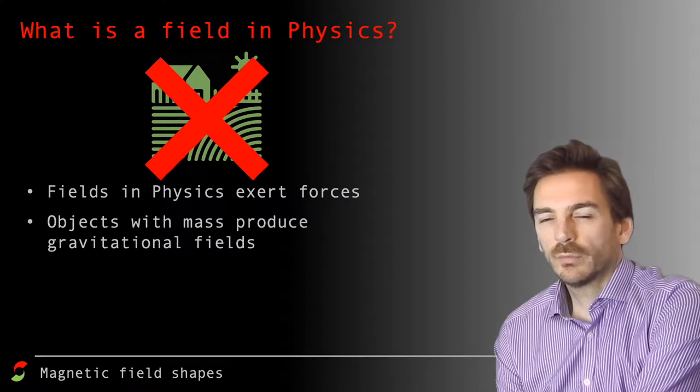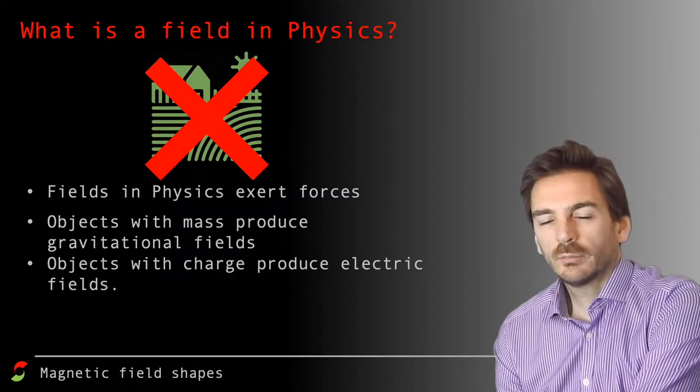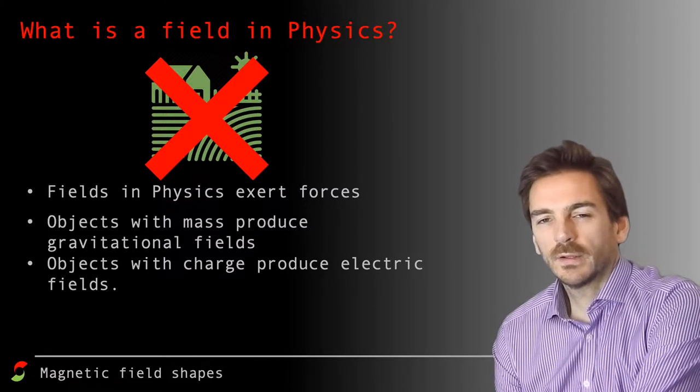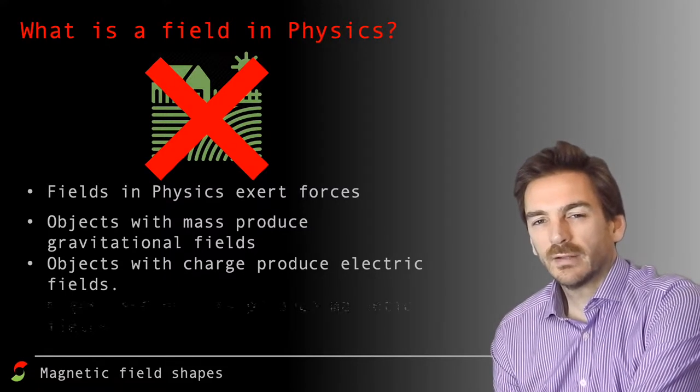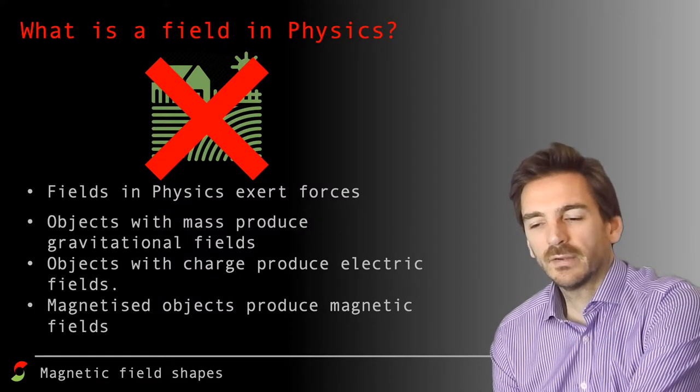Fields in physics exert forces and there are different types of fields and different types of forces. Objects with mass exert gravitational fields, objects with charge produce an electric field, and the one that we're going to be looking at today is magnetic materials produce magnetic fields and therefore magnetic forces.